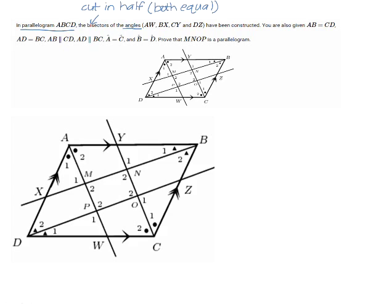We are also given AB equals CD and AD equals BC, which we know because this is a parallelogram — the opposite sides are equal and the opposite pairs of sides are parallel. Another property of a parallelogram is that opposite angles are equal, so angle A equals angle C and angle B equals angle D. The bisectors have been constructed, so each angle is split into two equal halves.